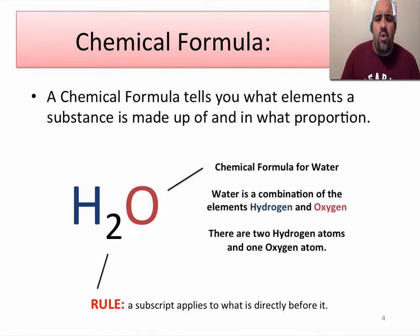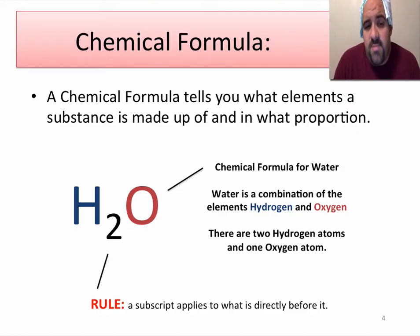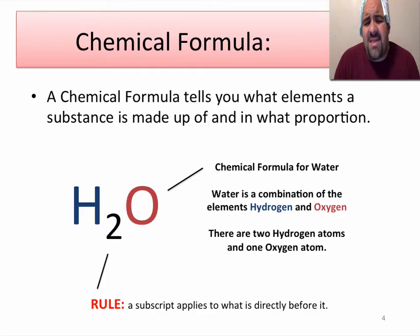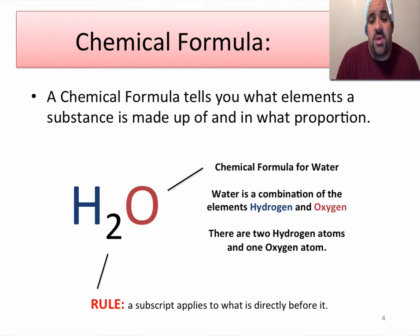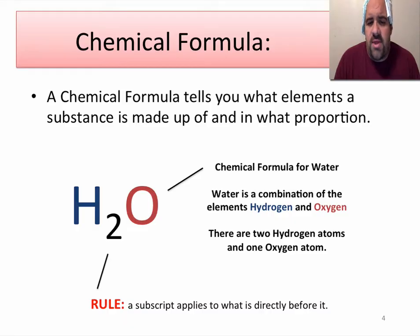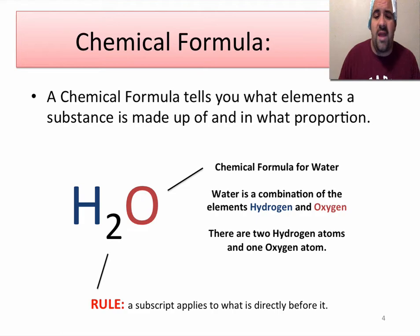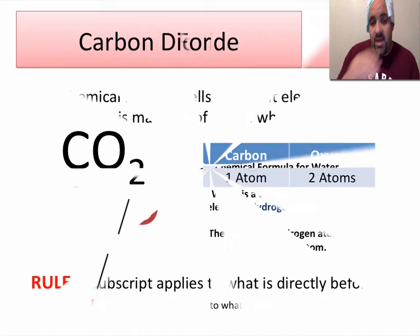There are two rules when reading chemical formulas. The first rule is that a subscript — that little two right there — applies to what is directly before it. So what comes directly before it? The H, the hydrogen. Water is a combination of hydrogen and oxygen atoms, and there are two hydrogen atoms and one oxygen atom in water. The two comes and applies to what is directly before it — whatever comes right before the two, that's what it applies to.